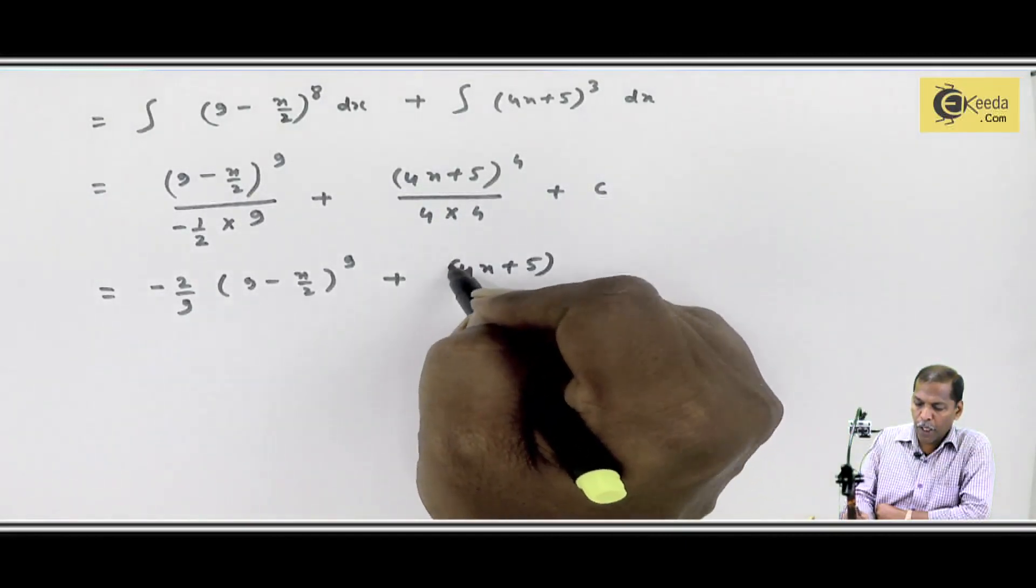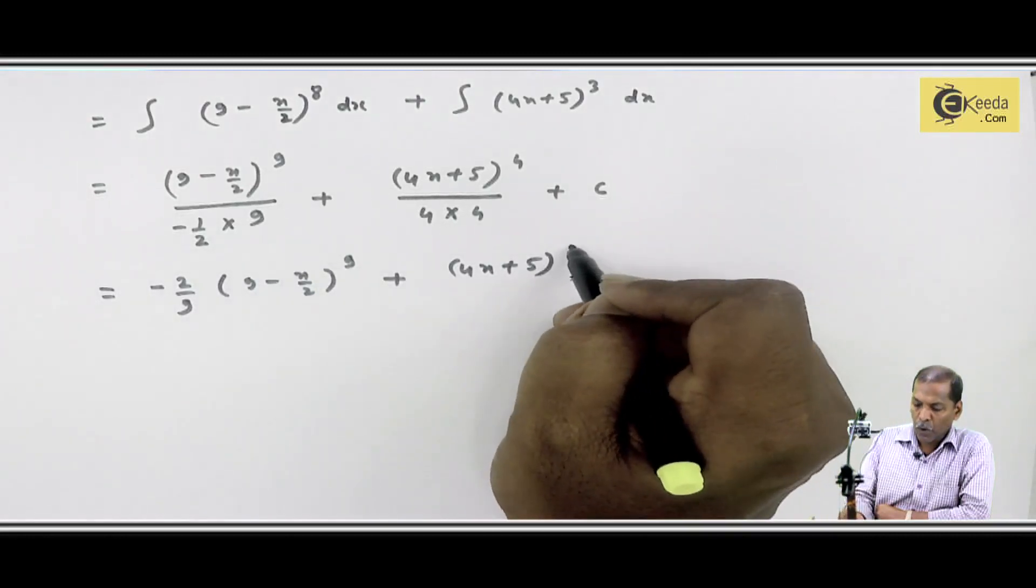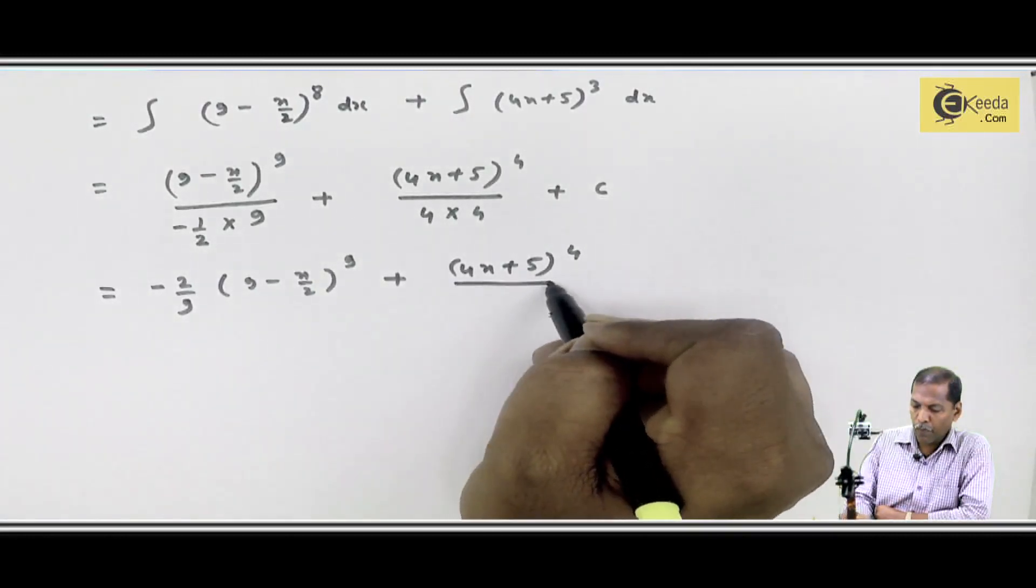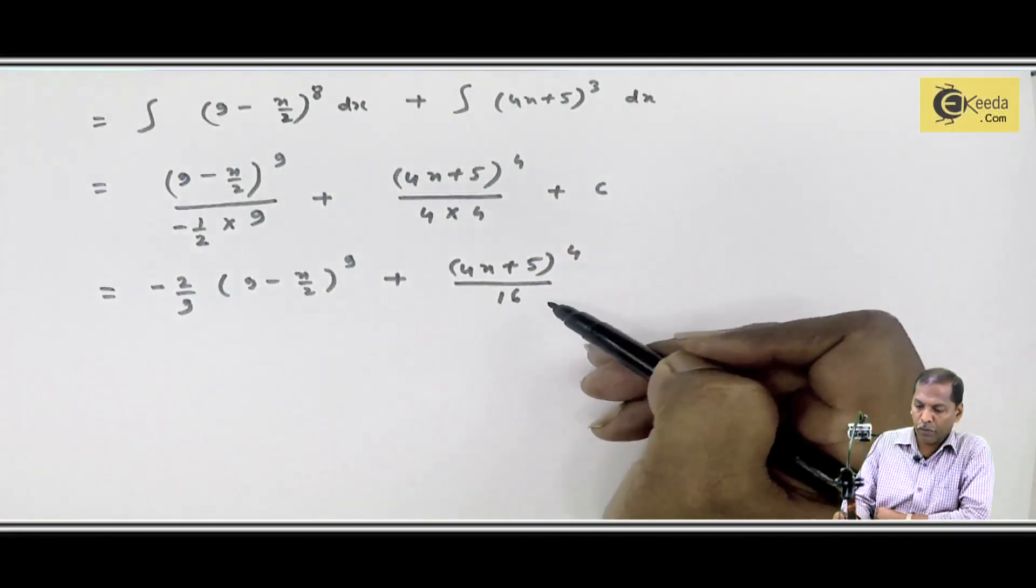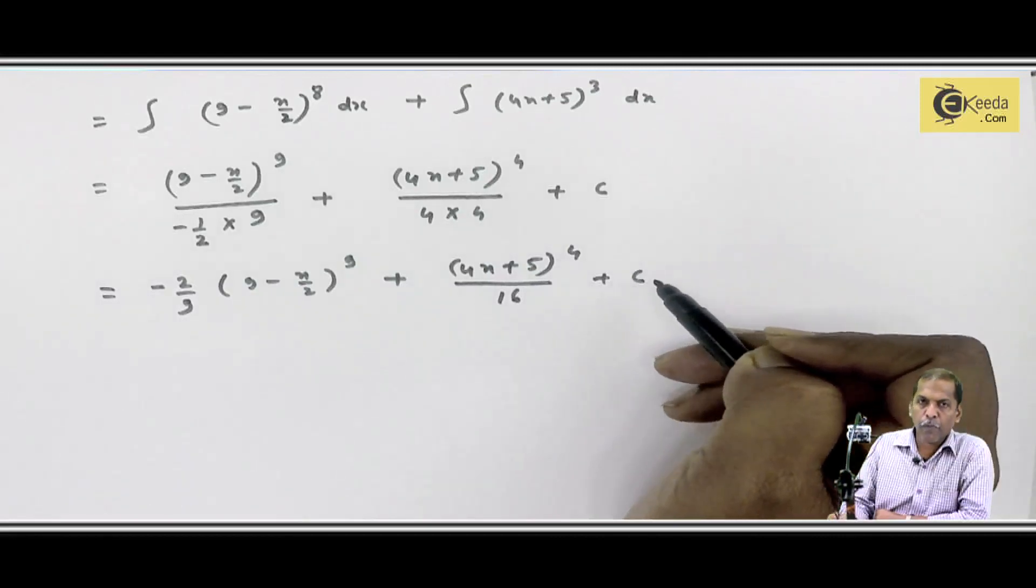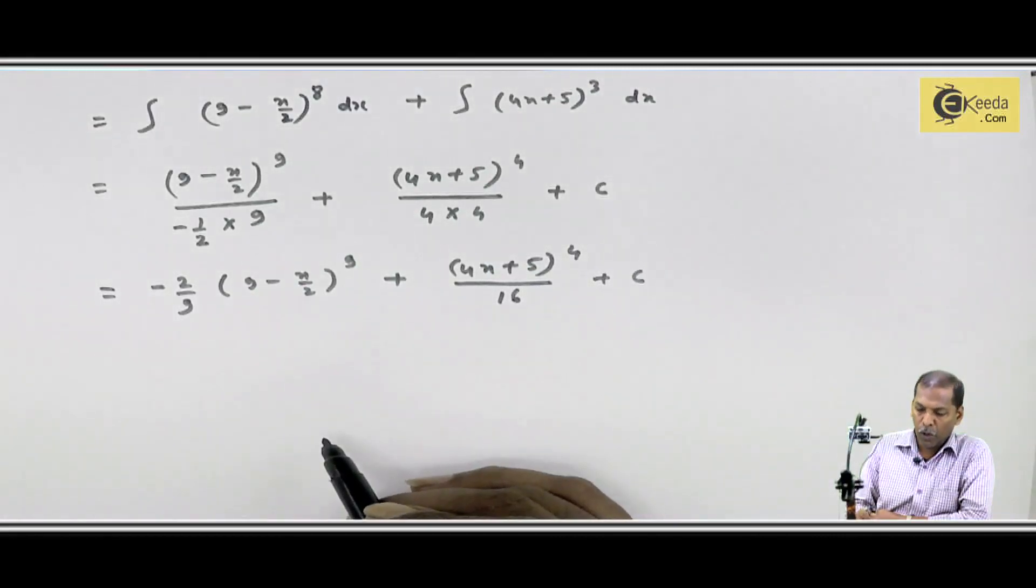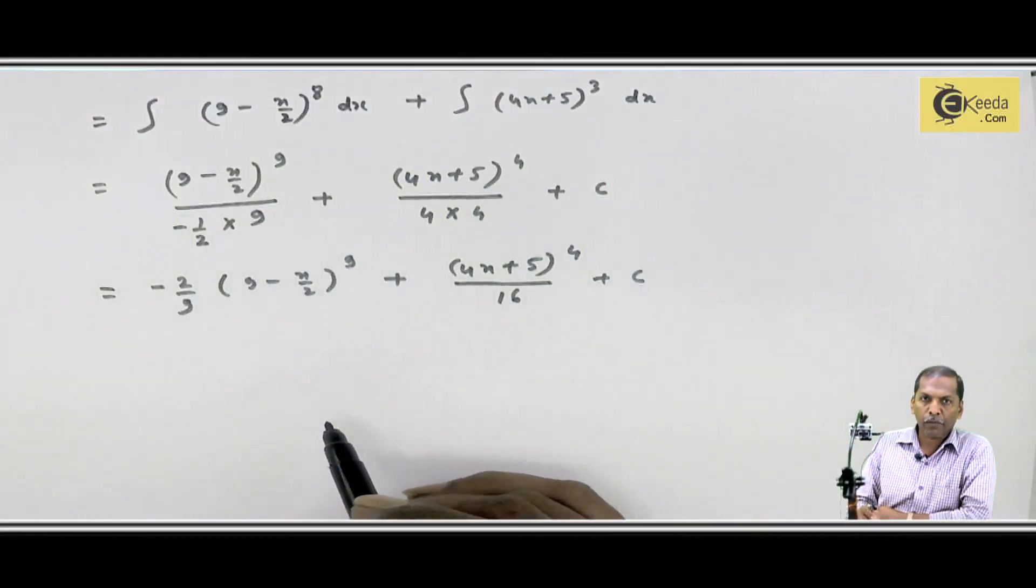4x plus 5 raised to 4, upon 4 into 4, which becomes 16, plus c. So this is the answer to our second problem.